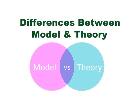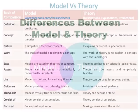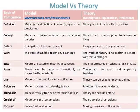Differences between model and theory. Model versus theory. A model is the definition of concepts, systems or predicates. Whereas, theory is a set of law-like assertions.